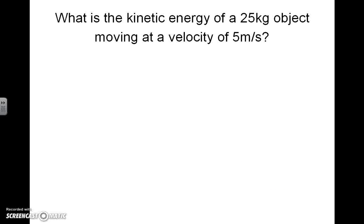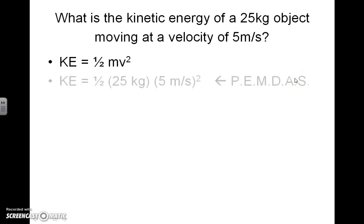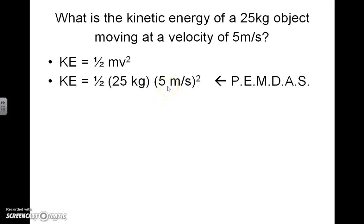What is the kinetic energy of a 25 kilogram object moving at a velocity of 5 meters per second? On these first few problems, I have the units with the values in the equation to make a couple of points. We've got the kinetic energy equation, and we notice we've got the mass and the velocity here in the problem. So we do the following substitutions: we put the 25 kilograms in for mass and the 5 meters per second in for velocity.